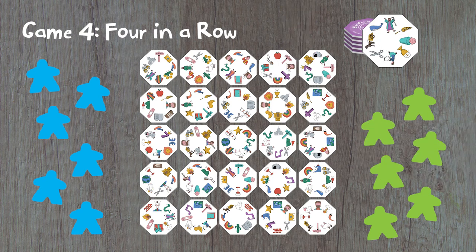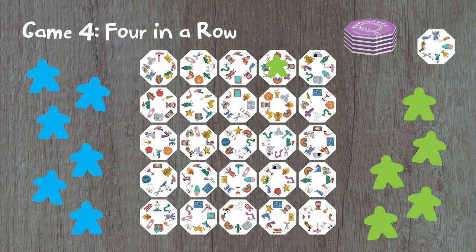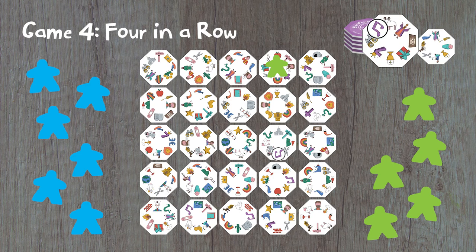If there are no tokens on that spot, you may place your token on it. Place the newly turned over tile in a common discard pile. Play continues with the next player flipping over another tile.